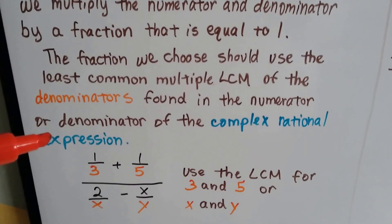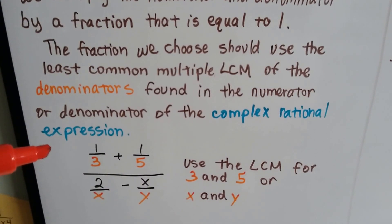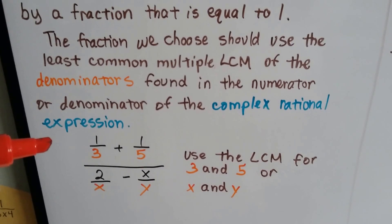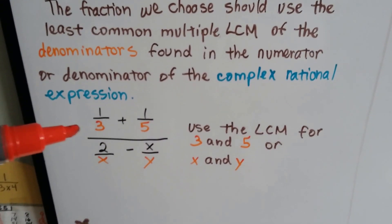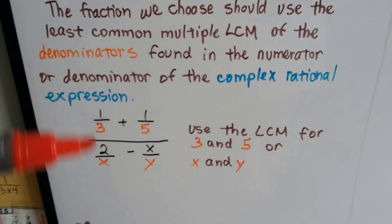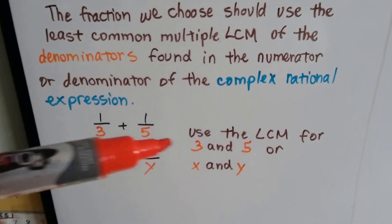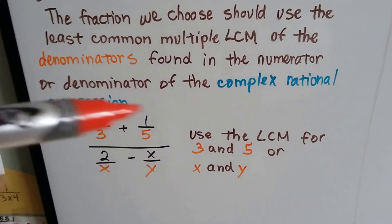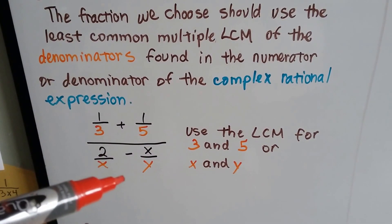The fraction we choose should use the least common multiple, the LCM, of the denominators found in the numerator and denominator of the complex rational expression. Here are the denominators in the numerator, and here are the denominators of the denominator, because we have this fraction bar. These are technically the numerator, and these are technically the denominator.